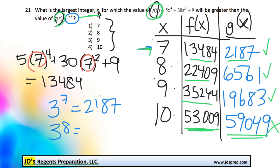So out of the three that work, the largest x value is 9. So that means that would be the correct answer. That's it for this video. Thanks for visiting JD's Regents Preparation.